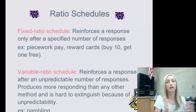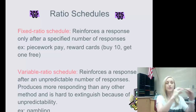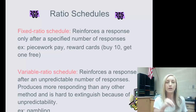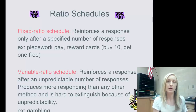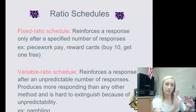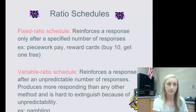Let's talk about ratio schedules — one fixed and one variable. Ratio is about the number of responses, or the number of times one responds. Make sure you write that down: ratio equals number of responses.